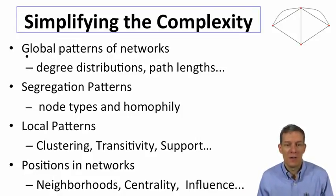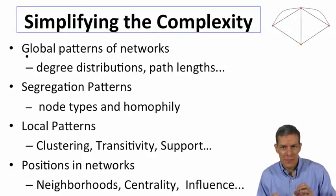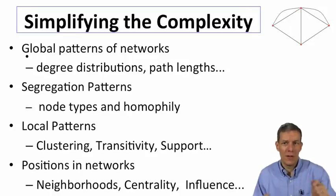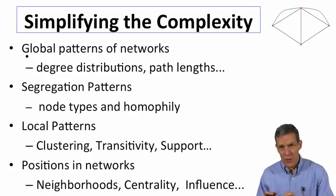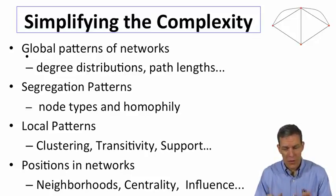Local patterns. Do we see tight clusters of nodes that are all tightly connected to each other, cliques? Do we see that if I'm connected to somebody else and they're connected to a third person, that I also tend to be connected to that third person, transitivity? Do relationships often have friends in common? Are they supported? We'll look at local patterns, zooming in on particular parts.